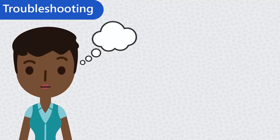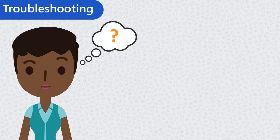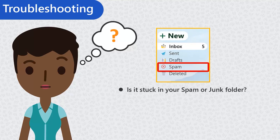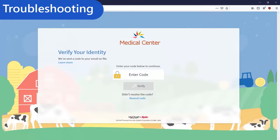But what if you didn't get the email? Or you don't know your username? Let me show you how to troubleshoot those situations. If you entered your personal information to reset your password but no email came through, check the spam or junk folders in your email. If it's not there, try clicking Resend Code.